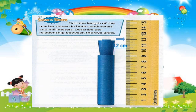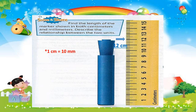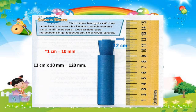What conversion unit are we going to use to solve this problem? We are going to use 1 centimeter equals 10 millimeters — converting from a larger unit to a smaller unit. When converting from a larger unit to a smaller unit, we use multiplication. So we multiply 12 centimeters by 10 millimeters. 12 times 10 equals 120 millimeters. Therefore, 12 centimeters is equal to 120 millimeters.